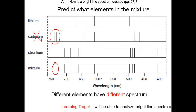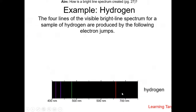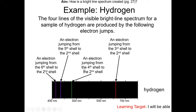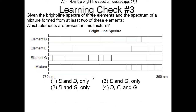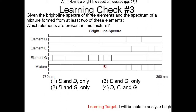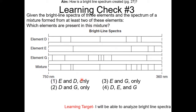For hydrogen's bright light spectrum, each line represents where the electron jumped from. Learning check number three: given the bright light spectrum of three elements and the spectrum of a mixture formed from at least two of these elements, which elements are present in the mixture? Try this yourself — pause the video and resume once you have the answer.